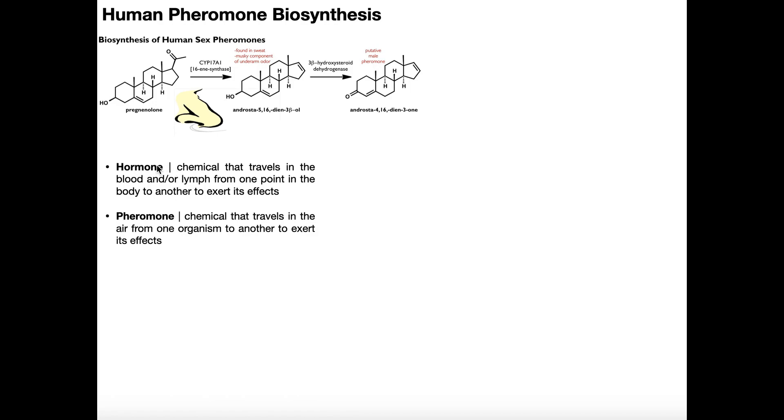So a hormone, this is typically what you talk about in anatomy and physiology and even biochemistry. It's really just a chemical that travels in the blood or lymph from one point in the body to another in order to exert its effect.